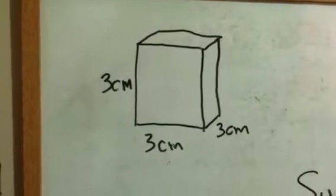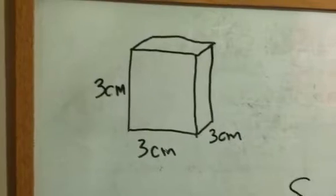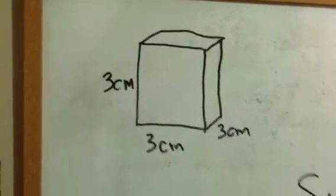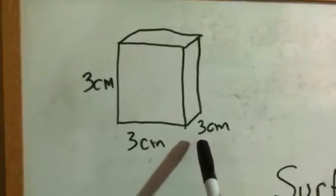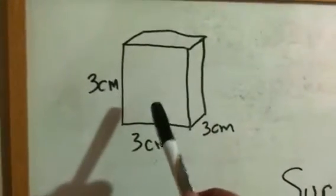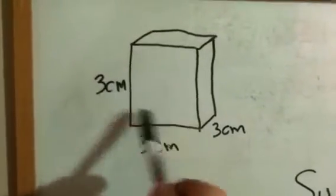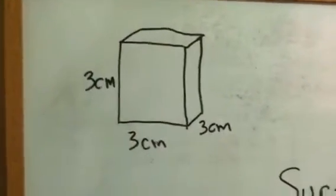As you can see here, we have a cube which is what we'll be working with in class. This particular cube is three centimeters by three centimeters by three centimeters. Now essentially what we'll be starting out with is the surface area which will just be the area of one side multiplied by the number of sides.